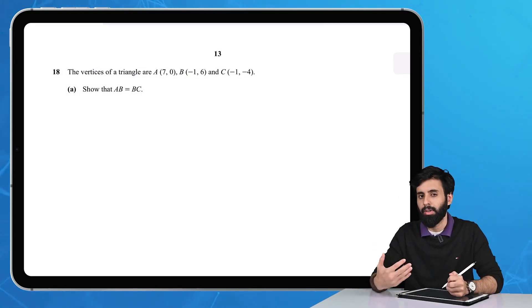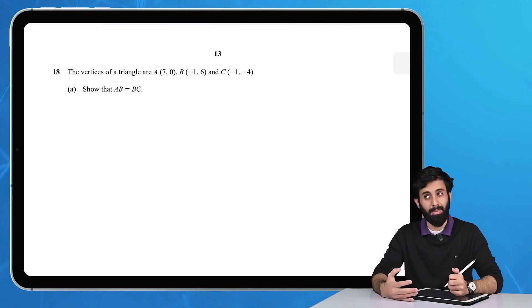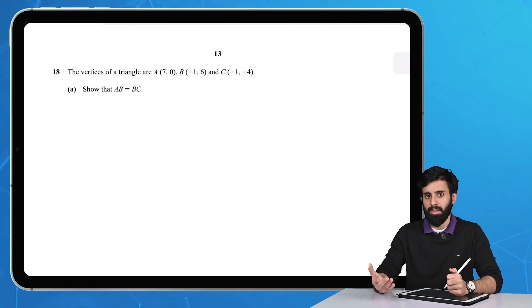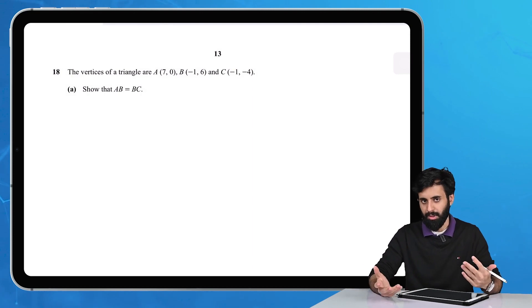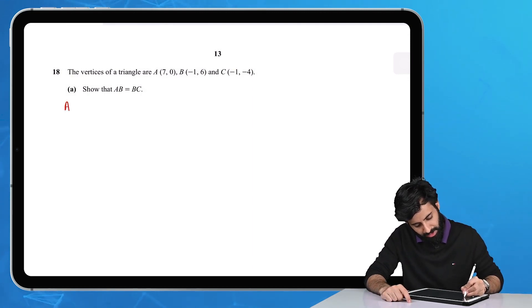We need to find the length of AB and the length of BC. If we do it right, they should be equal. Let's write down the coordinates of A(7,0) and B(-1,6).